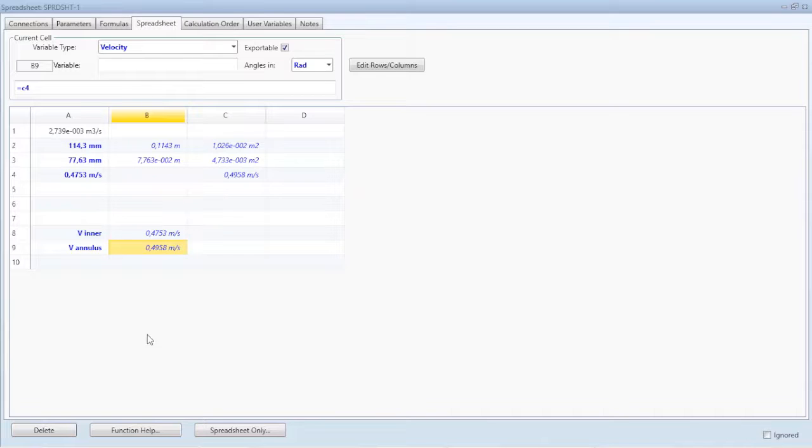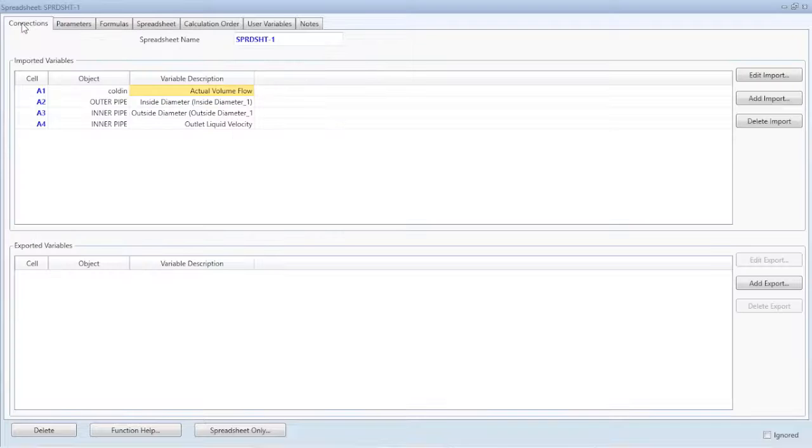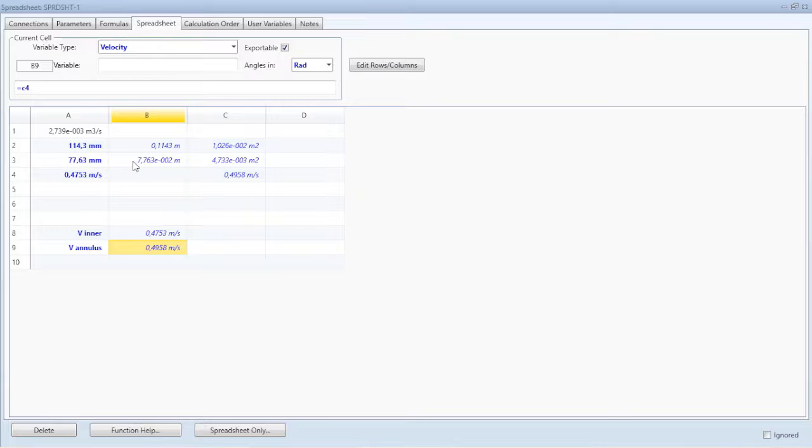Also the outputs that are calculated by Aspen HYSYS. Based on that, I am able on the spreadsheet to import some values from my process simulation, and in the spreadsheet tab organize the information in order that I add the correct equations for my purpose. In this way, what I need to do the calculations of velocity in the annulus side of the double pipe heat exchanger: I need the volumetric flow of the fluids at the outside of the inner pipe.